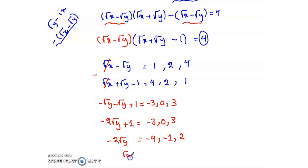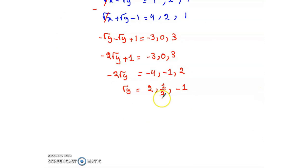To find radical y, divide by minus 2, so we get 2, 1 over 2, and minus 1. Minus 1 is rejected because radical y is always positive. 1 over 2 is rejected, it's not an integer, so the only possible solution is 2.